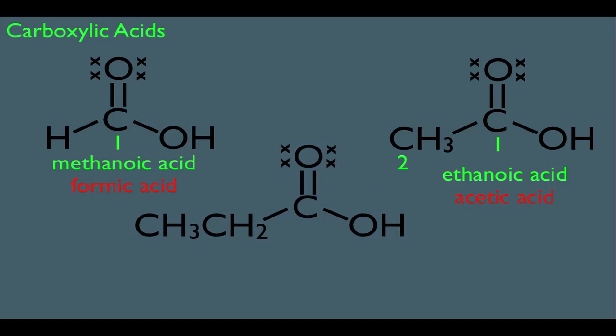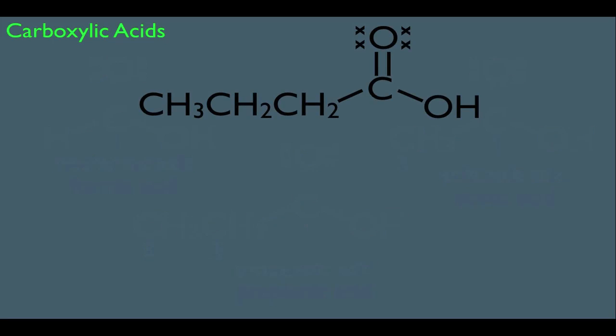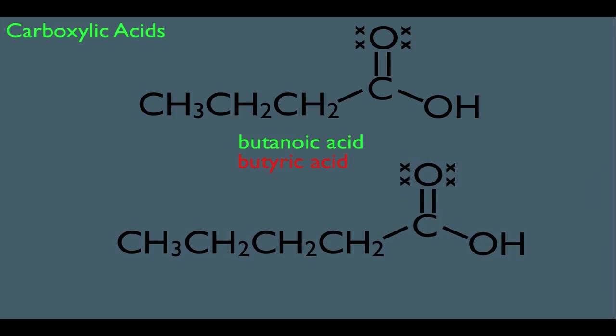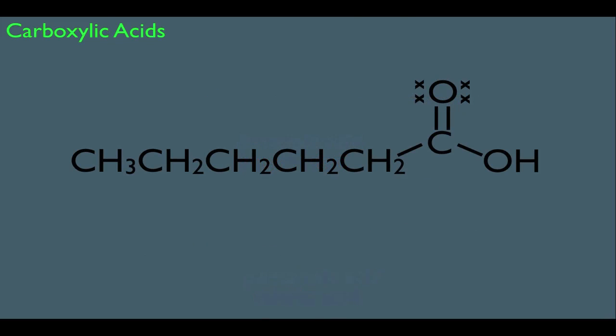A 3-carbon carboxylic acid using the IUPAC system would be propanoic acid, with the common name propionic acid. A 4-carbon chain would be butanoic acid, with the common name butyric acid. A 5-carbon carboxylic acid would be pentanoic acid, with the common name valeric acid. And a 6-carbon carboxylic acid would be hexanoic acid, with the common name caproic acid.